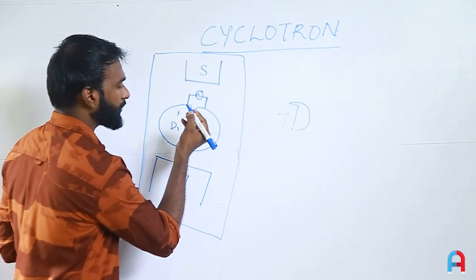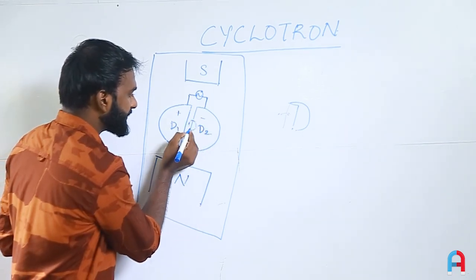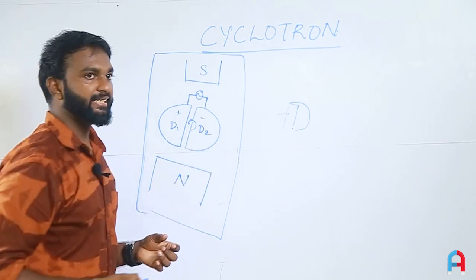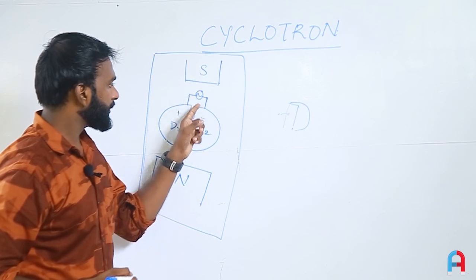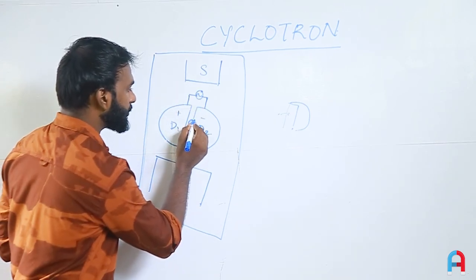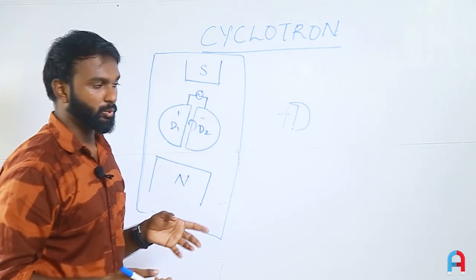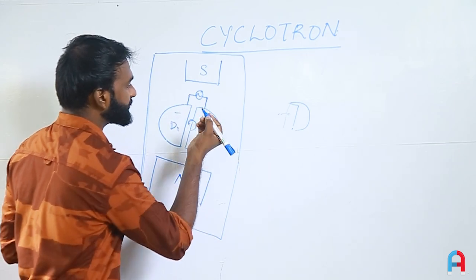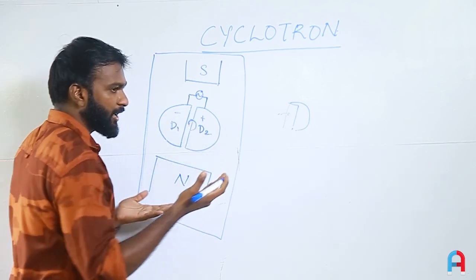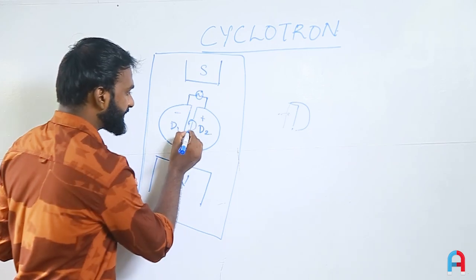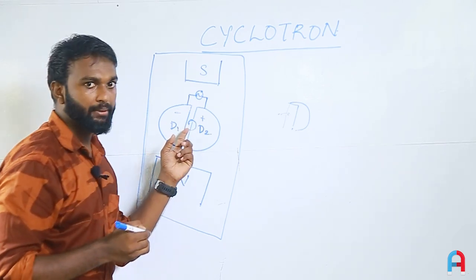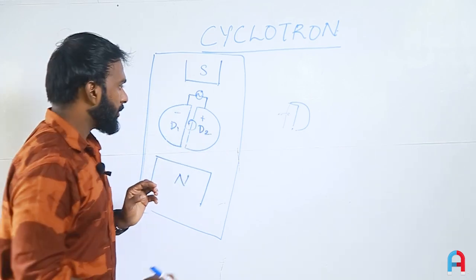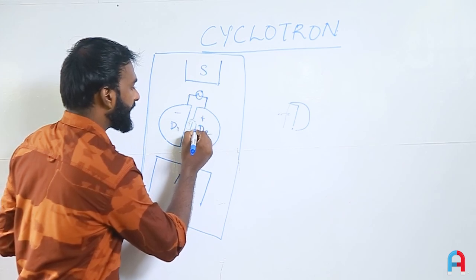The particle follows a semi-circular path inside D2. After completing the semi-circle, it reaches the gap between D1 and D2 again. At this point, the AC oscillator has completed a half cycle, so the polarity changes — D1 becomes negative and D2 becomes positive. The electric field now accelerates the particle again toward D1.